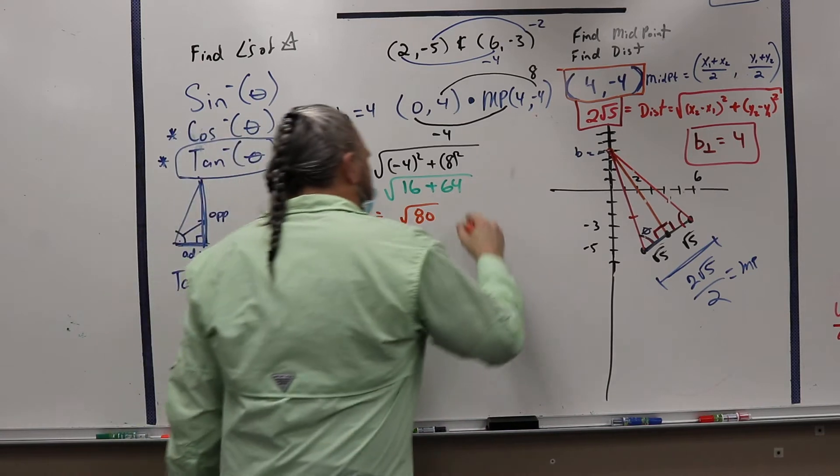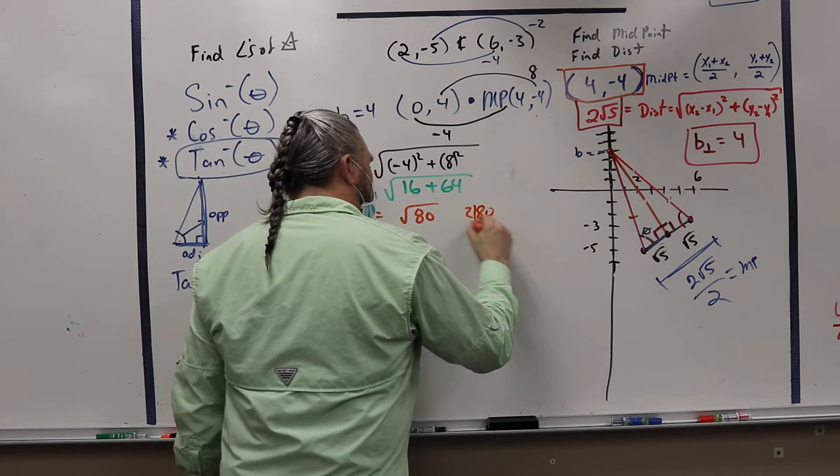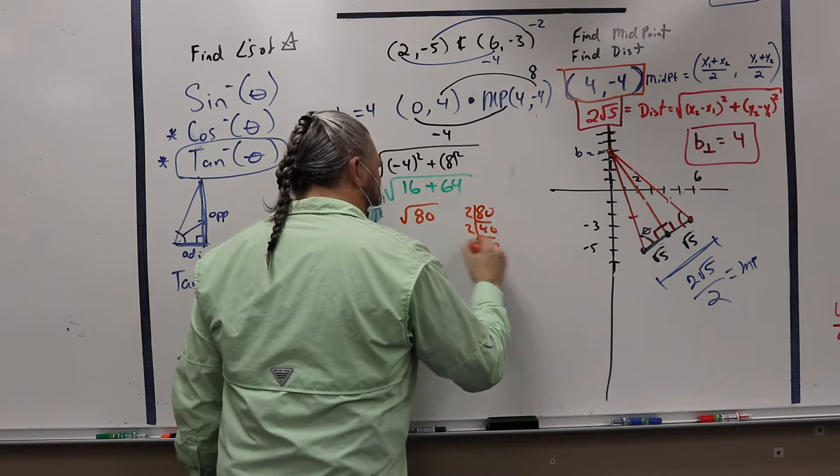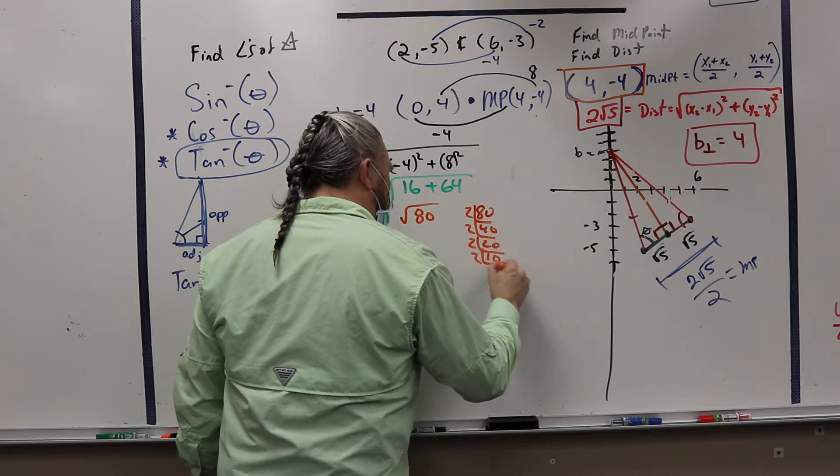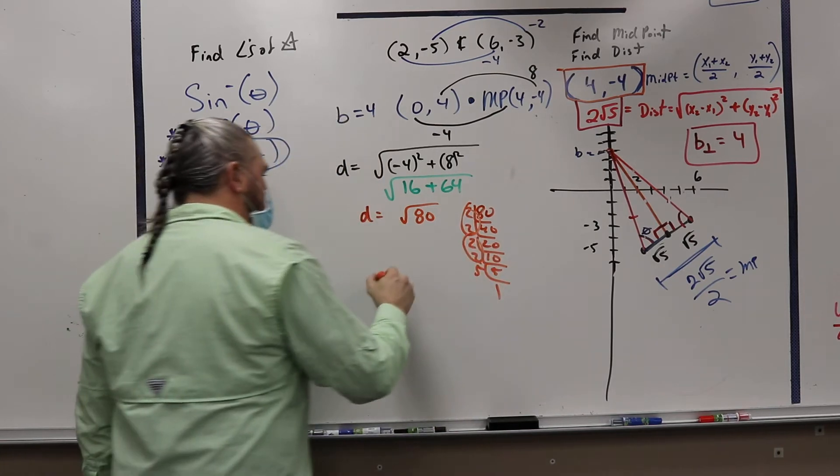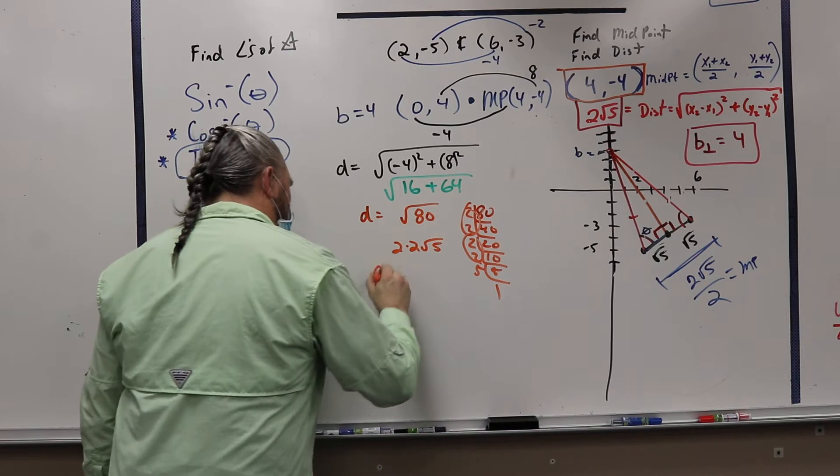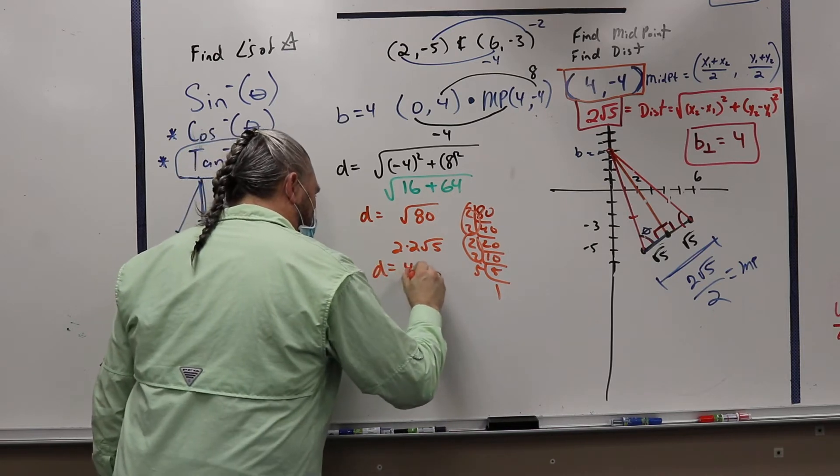So we have 80, 2, 40, 2, 20, 2, 10, 2, 5, 5, 1, pair of twos, pair of twos. So you have 2 times 2 square root of 5, which is what? 4 square root of 5.